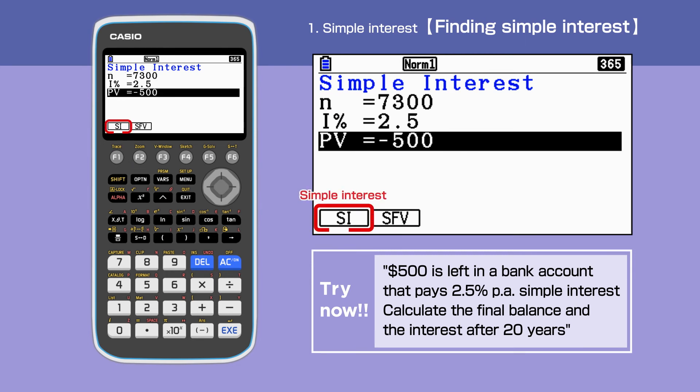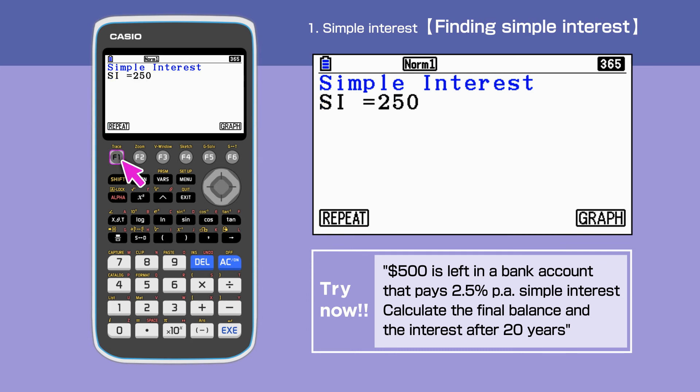Pressing F6 gives SI, simple interest. The interest amount is $250.